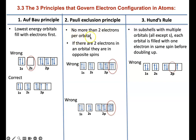The Pauli exclusion principle says no more than two electrons per orbital. If there are two electrons in an orbital, they must be in opposite spins — they can't be heading in the same direction. This example here is wrong because you have two electrons in the same spin.